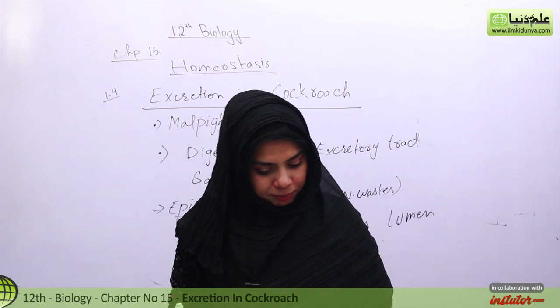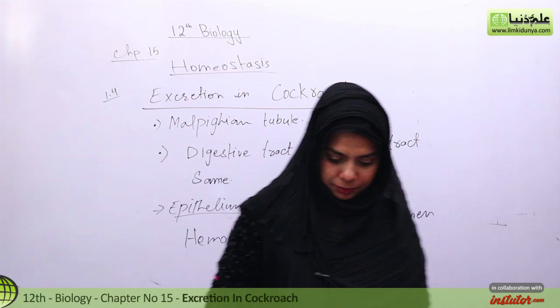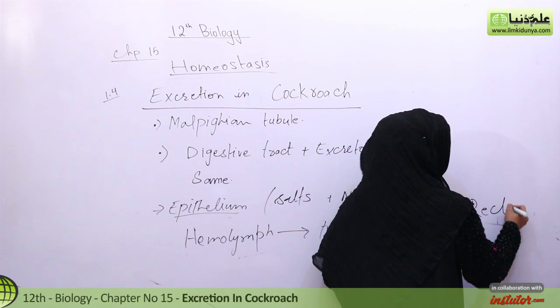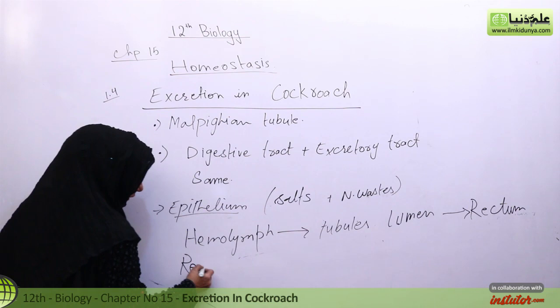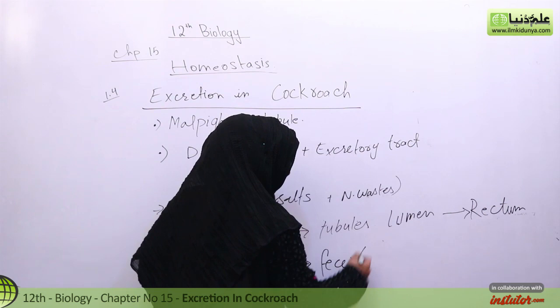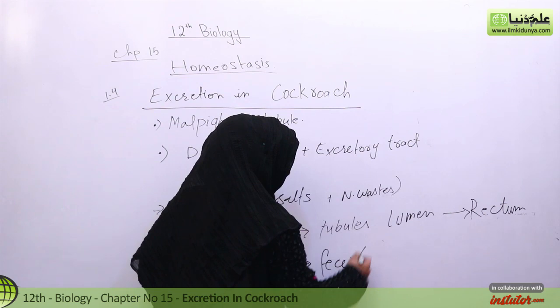Next, if we look at the tubules in the lumen, the nitrogenous waste and salt move from the lumen into the rectum. In the rectum, maximum reabsorption takes place. The useful materials — salt and water — will be reabsorbed, and the rest of the material will be excreted as feces in solid uric acid form.